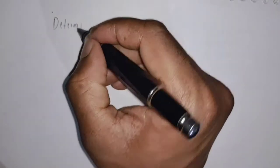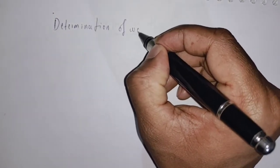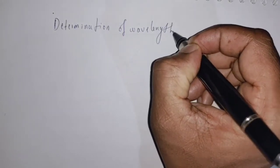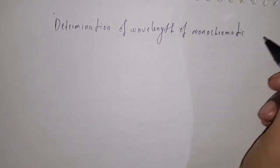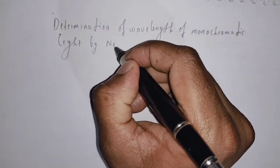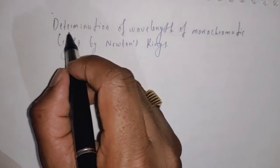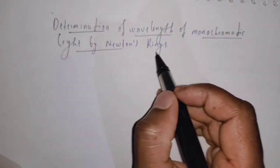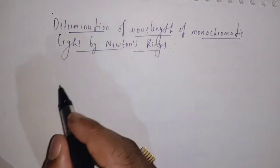In this video, I am going to discuss the determination of wavelength of monochromatic light by Newton's rings experiment. Now let us see the experimental arrangement to determine the wavelength of monochromatic light by Newton's rings.